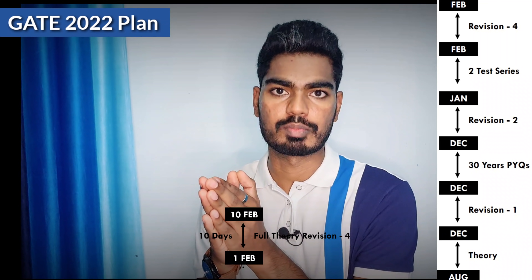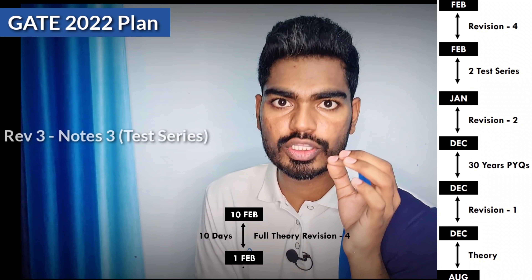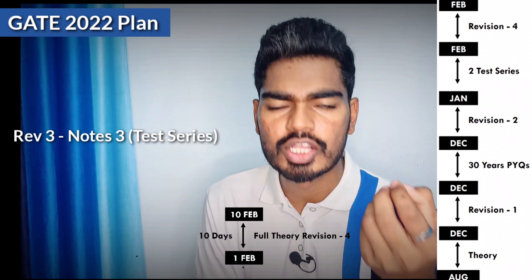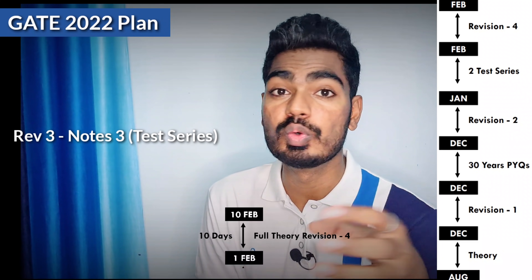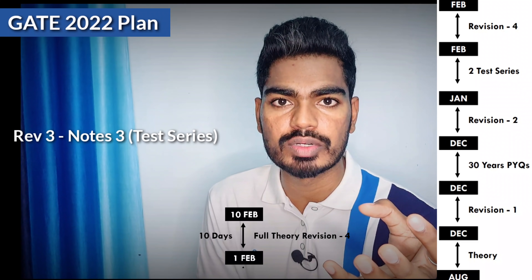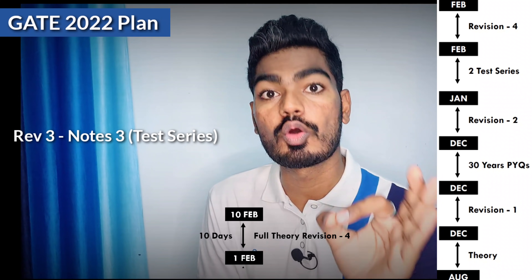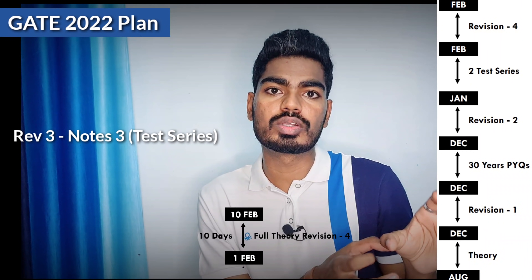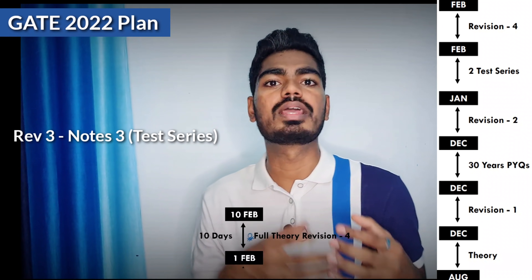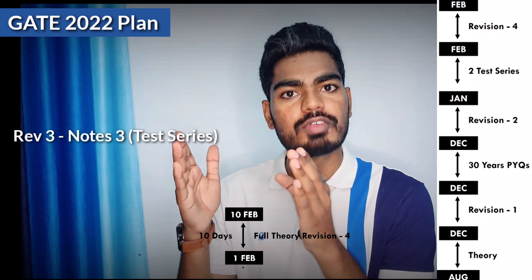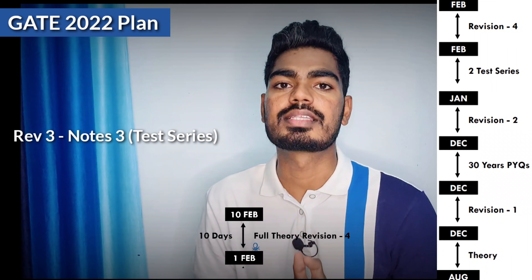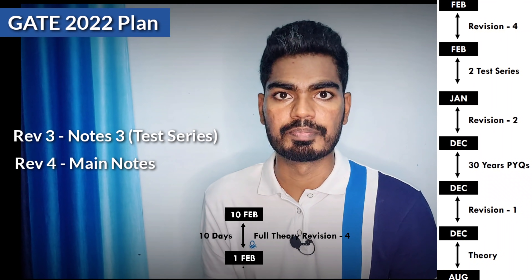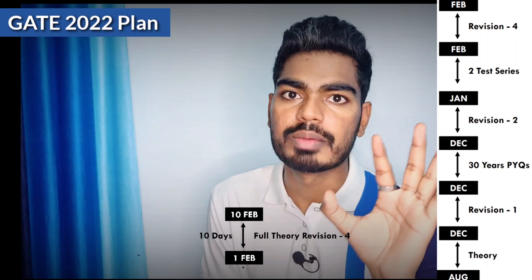Your exam is in February, either on the first or second weekend. You should use the time in February completely for revisions — revision number three and revision number four. Revision three is for the notes made from your test series, which will be roughly 15 to 20 pages, taking one to two hours to revise and easily done on a daily basis. In the remaining time, revision four is a complete revision of your theory from the initial notes or initial source.